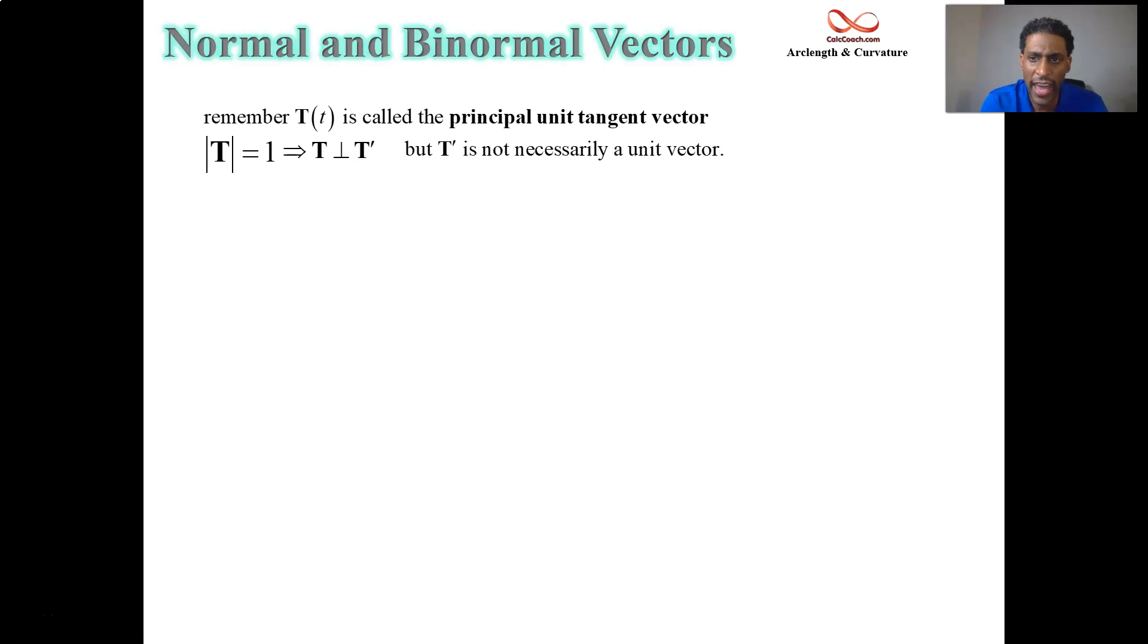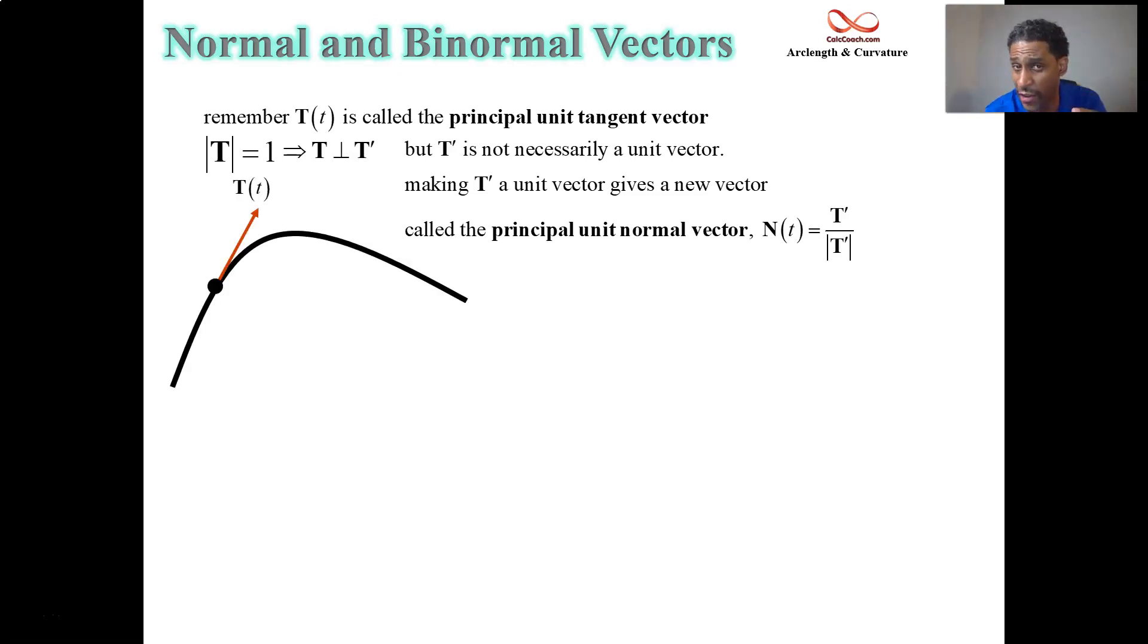So because of this fact, we're interested in making this derivative vector a unit vector. It gets a new name. It's called the normal vector, the unit normal vector. It is the principal unit normal vector. And so if we have a curve and we have a unit tangent vector, orthogonal to it, actually pointing inside will be the unit normal vector.